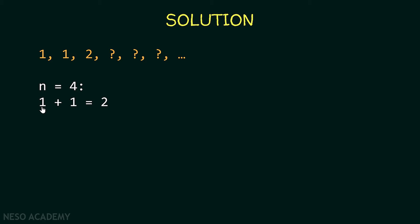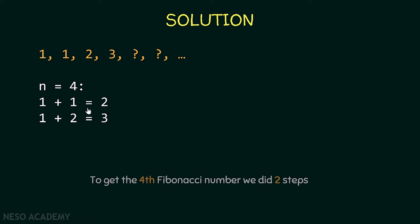So the first step is 1+1=2, then 1+2=3, giving us the 4th Fibonacci number. Notice that to get the 4th Fibonacci number we did 2 steps. So when n is equal to 4 we have 2 operations.